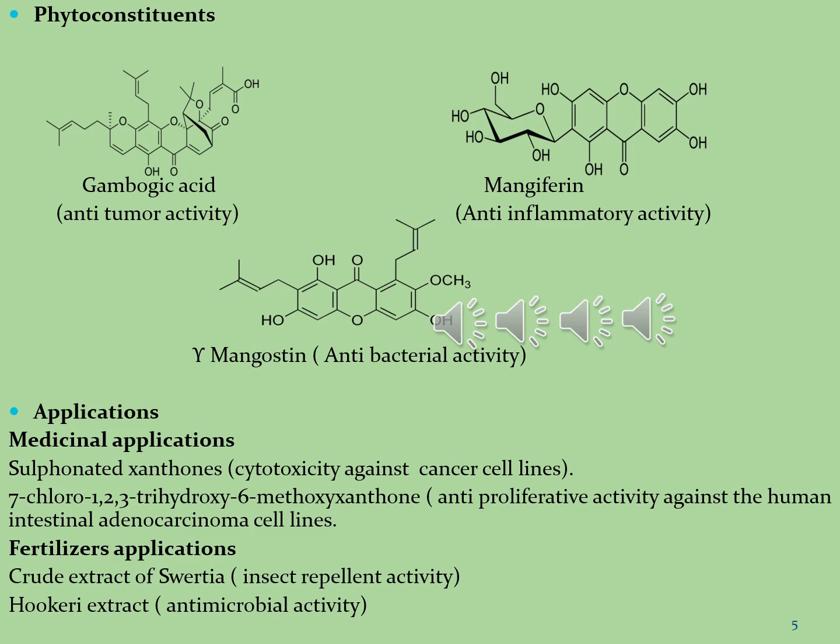Xanthones can also be used in medicinal applications as well as in fertilizers. You can see sulfonated xanthones, which are used as cytotoxicity agents in cancer cell lines. The second molecule, 7-chloro-1,2,3-trihydroxy-6-methoxyzanthone, is used as anti-proliferative activity against human intestinal adenocarcinoma cell lines. In fertilizer activity, crude extract of Civetia is used; insect repellent activity and hookah extract are used as antimicrobial activity.